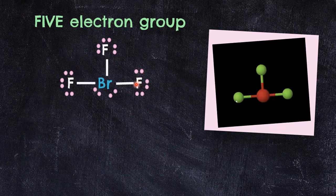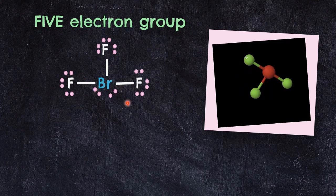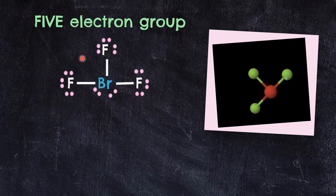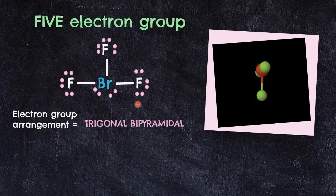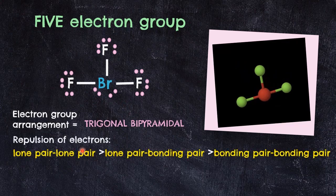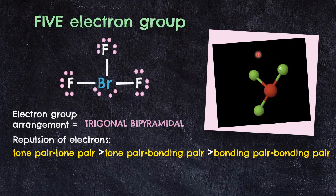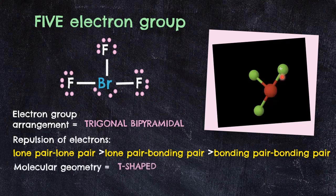BrF3 contains 3 bonding pair electrons and 2 lone pair electrons, giving a trigonal bipyramidal electron group arrangement. The 2 lone pairs on the central atom cause the greatest repulsion between the bonds. The repulsion between the lone pair and lone pair electrons forces the terminal atoms to align as far apart as possible, resulting in a T-shaped geometry with a bond angle of 90°.